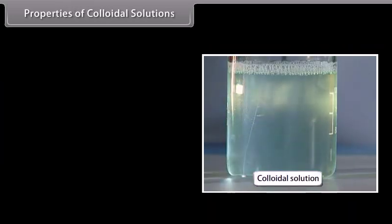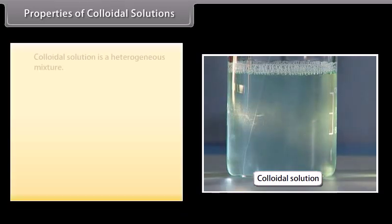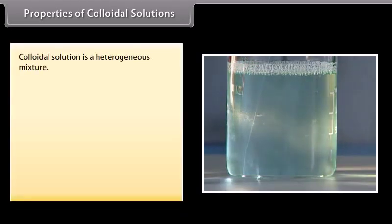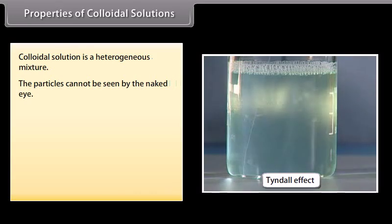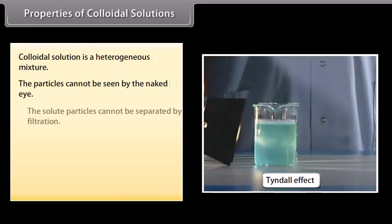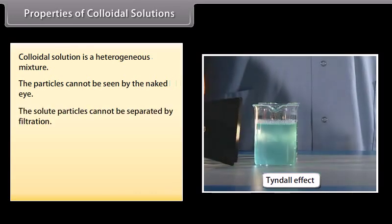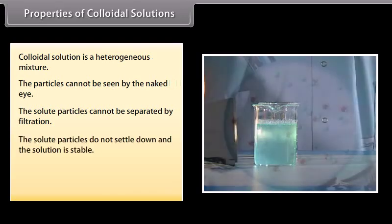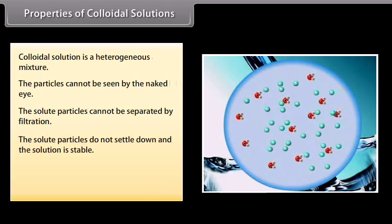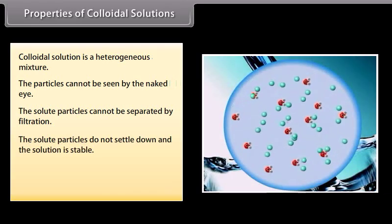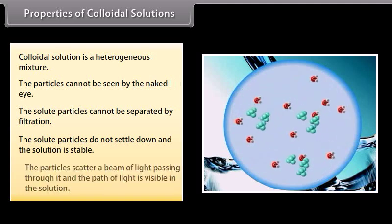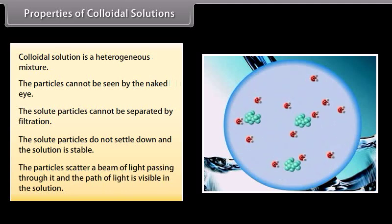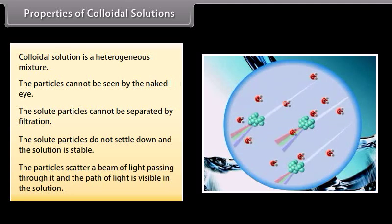Properties of colloidal solutions. A colloidal solution is a heterogeneous mixture. The particles cannot be seen by the naked eye, and the solute particles cannot be separated by filtration. The solute particles do not settle down, and the solution is stable. The particles scatter a beam of light passing through it, and the path of light is visible in the solution.